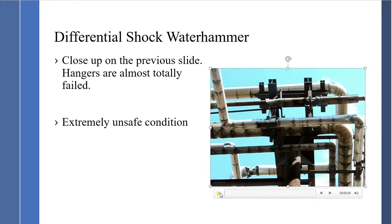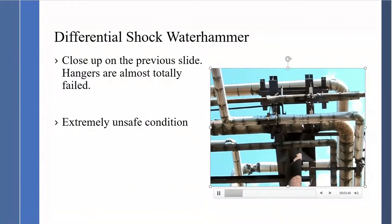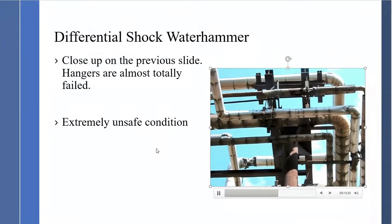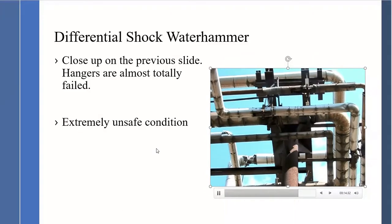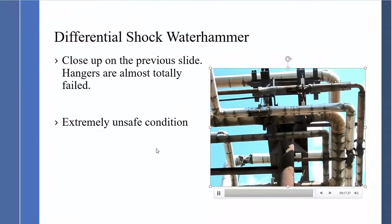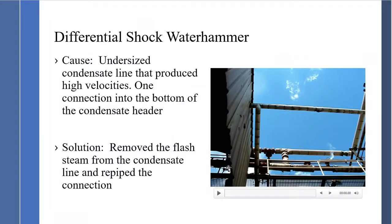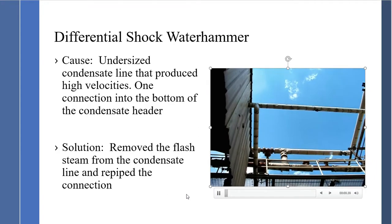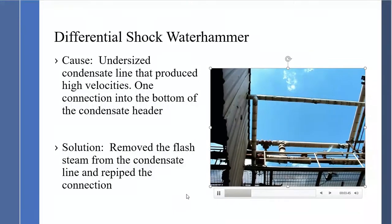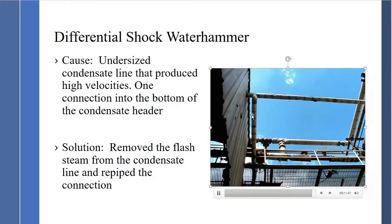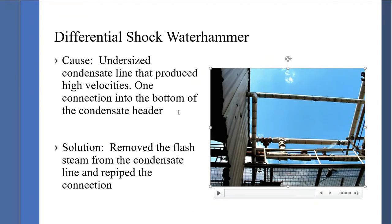A close-up shows visible damage to the pipe support from the water hammer effect. This was an unsafe condition due to plant personnel being in the area. Correction happened immediately. Another condensate line example shows an undersized line producing high velocity, with one connection into the bottom of the condensate header. The correction involved removing the flash steam from the condensate line and re-piping the connection to the top of the header, which eliminated the water hammer.